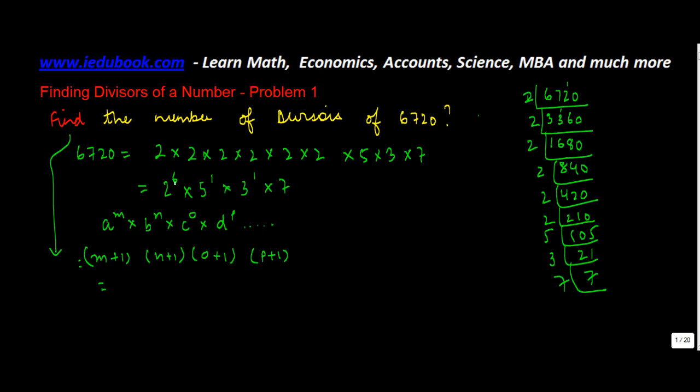So what is the value of m? 6. So 6 plus 1, then 1 plus 1, o is what? 1 plus 1, p is what? 1 plus 1. So you get 7 into 2 into 2 into 2, which gives you 56. So there are 56 divisors of 6720.